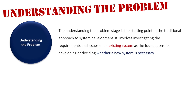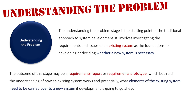The understanding the problem stage is the starting point of the traditional approach to system development. It involves investigating the requirements and issues of an existing system — the system currently being used in an organization — as the foundation for deciding whether a new system is necessary. The outcome of this stage may be a requirements report or requirements prototype.